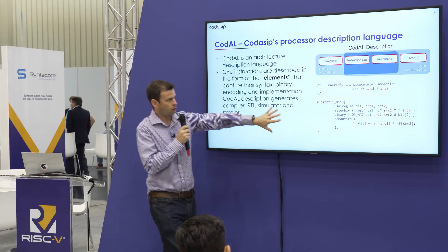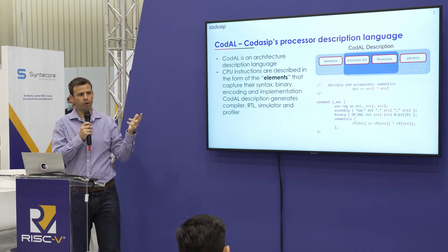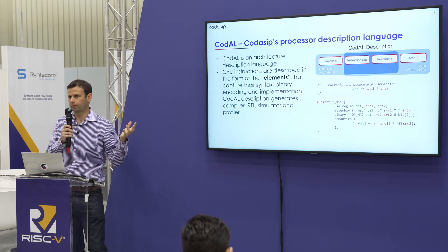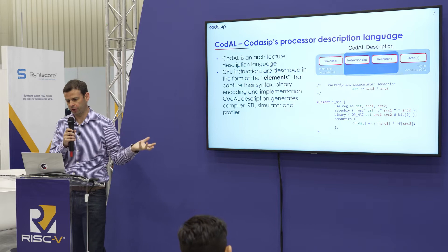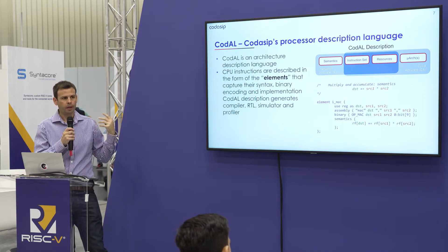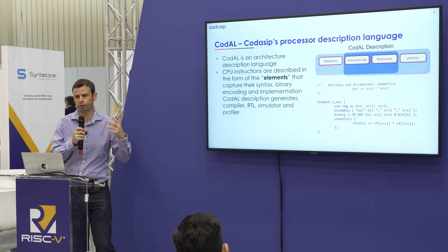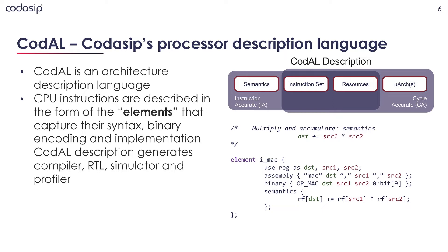There's an example here of how you would describe a multiply-accumulate operation in our Codal language. It's very easy to bring in the registers you need. If you need a multiport register file, it's very simple to extend it in the architecture description. We have assembly encoding that helps both for handwriting assembly and for the disassembly tool, binary encoding of the instruction that the compiler needs, and a high-level functional description at the instruction-accurate model level. For simple instructions, the compiler can target these automatically — you don't need to change your code; just recompile with the new compiler and it will pick up the custom instructions.